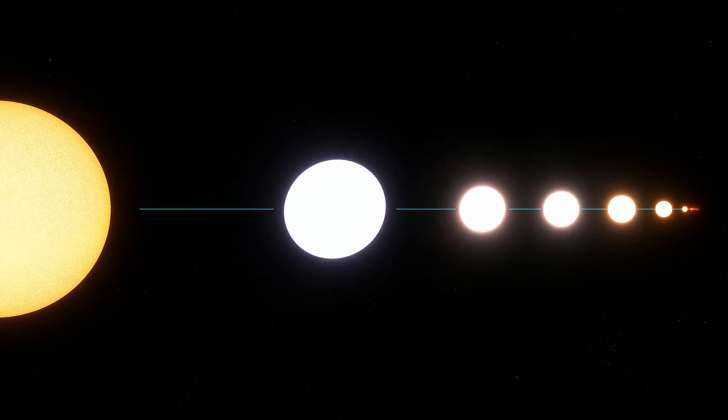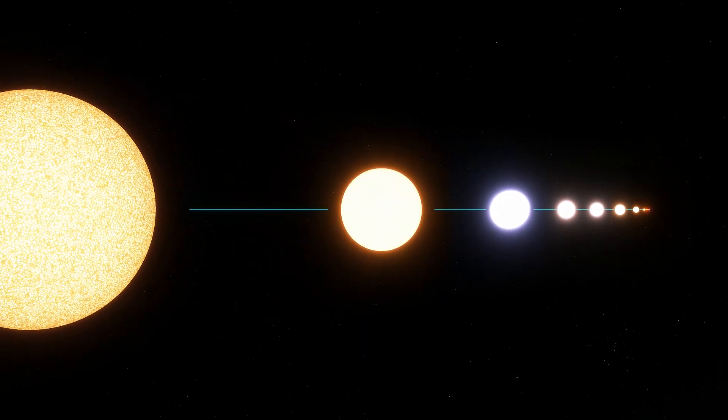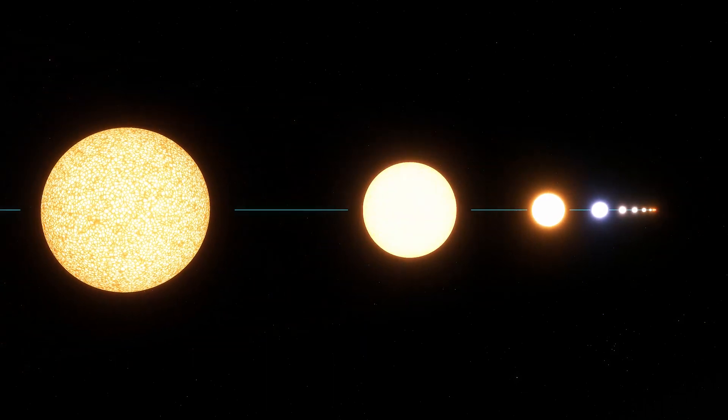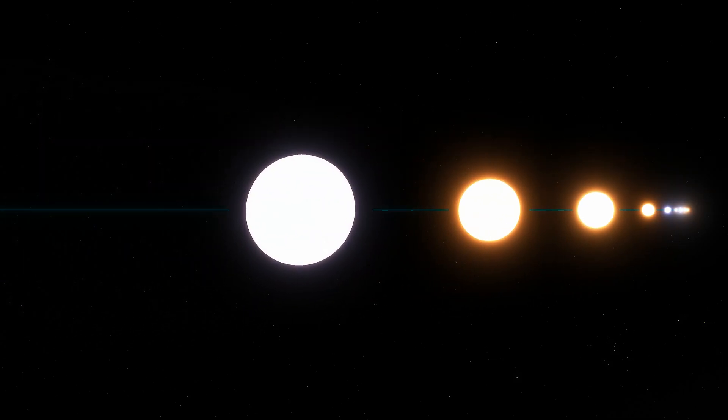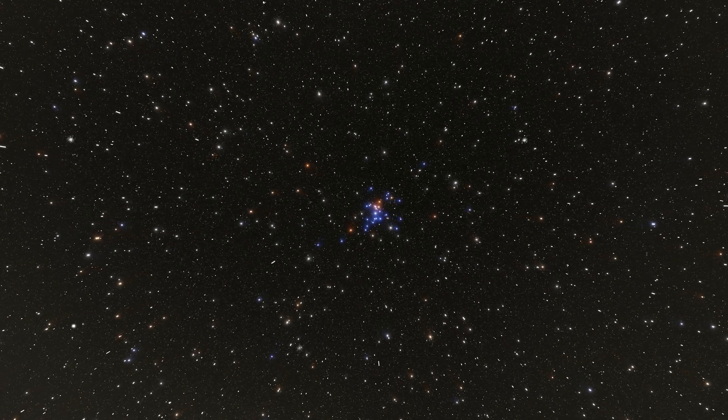And what happens if you keep on adding mass to these stars? Stars like our sun are considered tiny compared to how big they can get. The largest star that we know of is over 250 times more massive than our star. And if it was placed next to our sun, it would outshine it by the same factor that our sun outshines the moon. And the universe is filled with them.